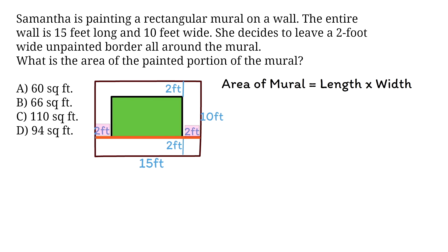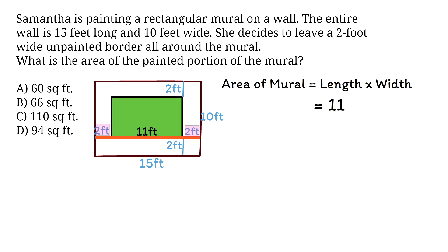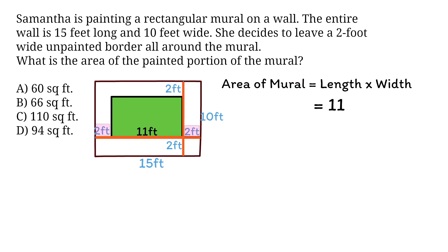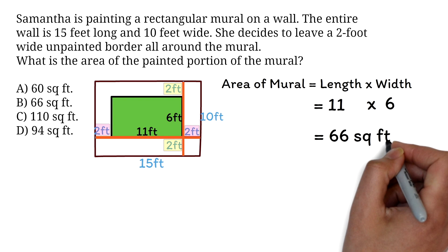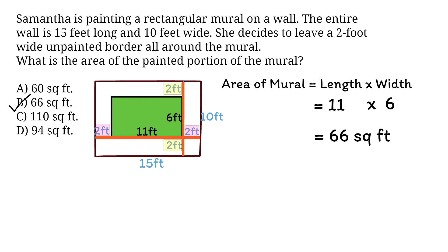We know the length of the wall is 15 feet. 2 feet has been subtracted from the left and 2 feet has been subtracted from the right. So the length of the mural will be 15 - 4, which is 11 feet. The width of the mural is similar. The width of the wall is 10 feet. We subtract 2 feet from the top and 2 feet from the bottom. So we have the width to be 10 - 4, which is 6 feet. Now that we know the dimensions of the mural, we can find the area. We have area of the mural equals 11 times 6. This is 66. So the area of the painted portion of the mural is B, 66 square feet.